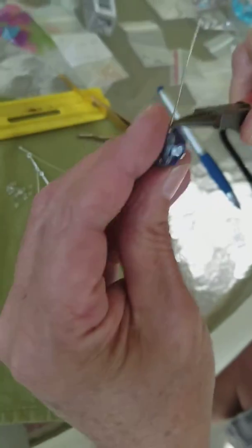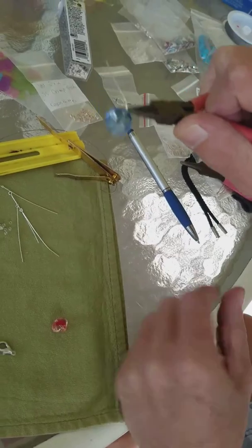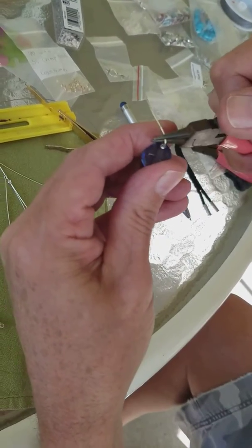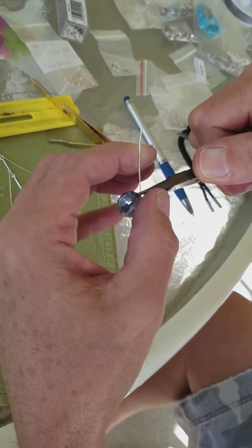Start with the needle nose pliers. Take it all the way down to the end. Take the wire and press it away from you. Flip your pliers up. The more meat, the more you have to wire wrap, remember, so keep it at the very end.